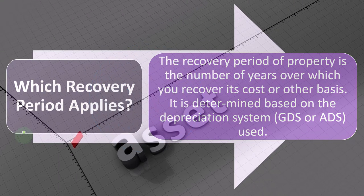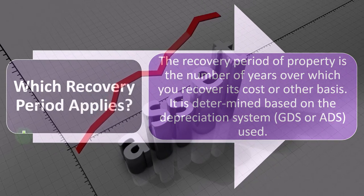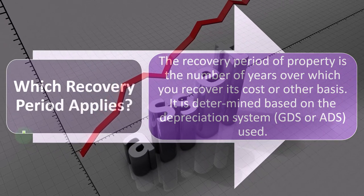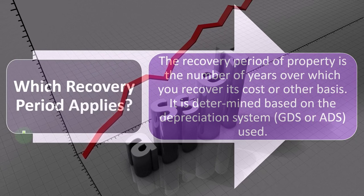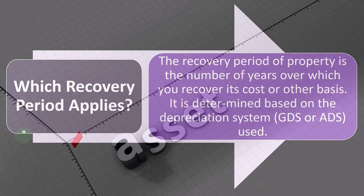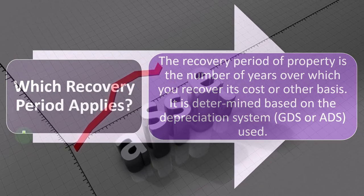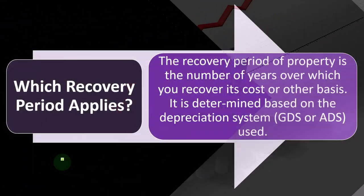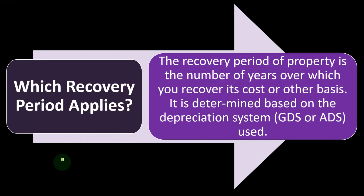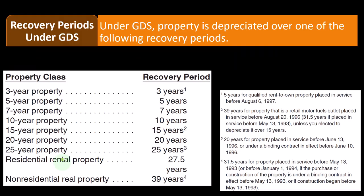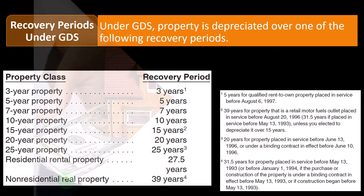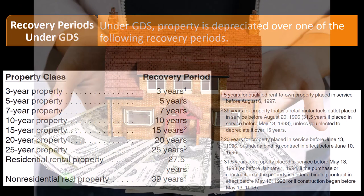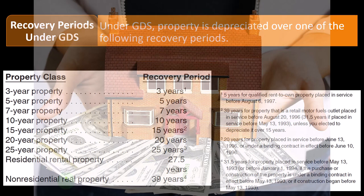Other things don't make as much sense from a bookkeeping standpoint, as we discussed with the Section 179 deduction and the special depreciation concepts. The recovery period is determined based on the depreciation system — the GDS or ADS — the two systems under MACRS. The GDS is the most common, generally.